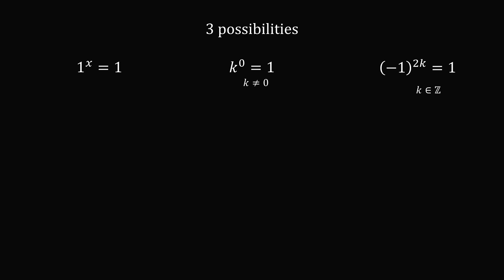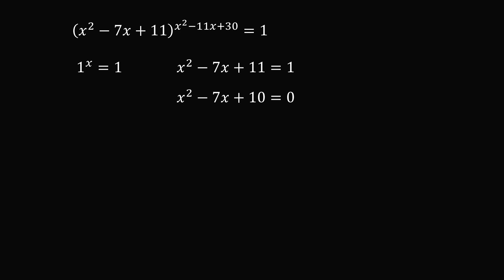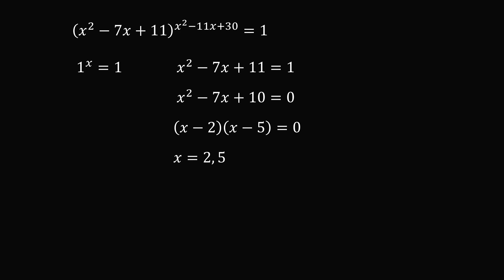Let's solve for each of these cases separately, starting where the base is equal to 1. In our equation, the base is the quadratic x squared minus 7x plus 11, which must equal 1. Subtracting 1 from both sides gives x squared minus 7x plus 10 equals 0. This factors easily: 10 equals 2 times 5, and 2 plus 5 equals 7, so we get (x minus 2)(x minus 5) equals 0, giving solutions x equals 2 or x equals 5.